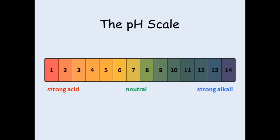Hopefully you're all aware of the pH scale. This is a range of numbers going from 1 to 14 which can be used to tell whether a chemical is an acid, an alkali, or whether the solution is neutral.